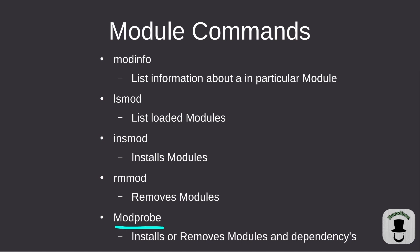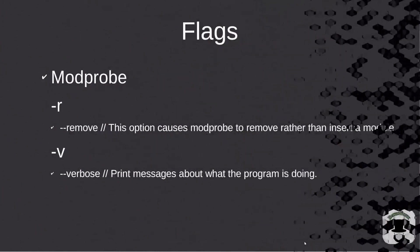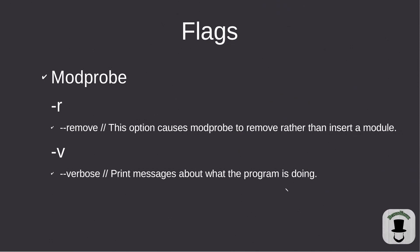modprobe is probably what you'll use more often than insmod and rmmod, because if a module has a lot of dependencies, modprobe takes care of them for you automatically. For flags: the -r flag is for remove, and the -v flag is for verbose. Just running modprobe with a module name will install it; add -r to remove it.